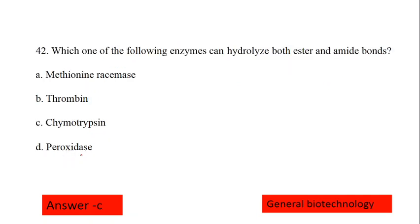Next question, which one of the following enzymes can hydrolyze both ester and amide bonds. Our first option is methionine racemase, this is an isomerase enzyme, so it does isomerization. This is not our answer. Option D peroxidase catalyzes oxidation and reduction both reactions, so this is not our answer. Option C, chymotrypsin is a serine based protease and it hydrolyzes the ester and amide both bonds. The correct option is option number C.